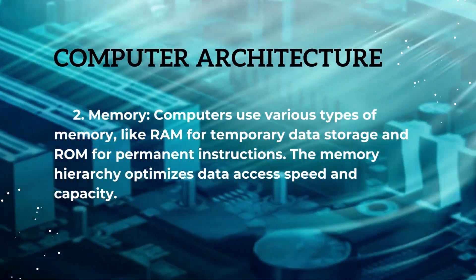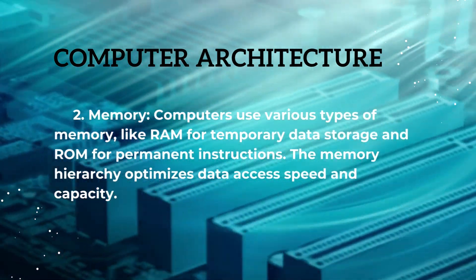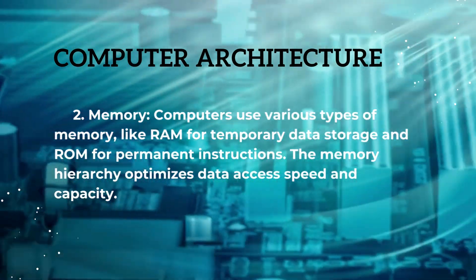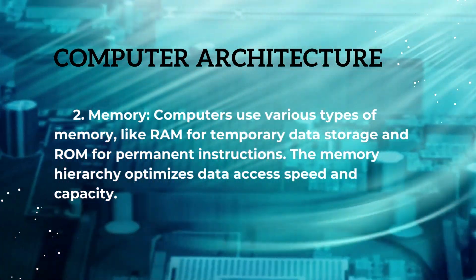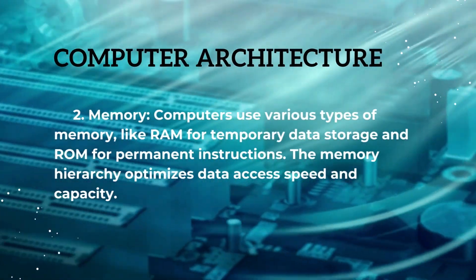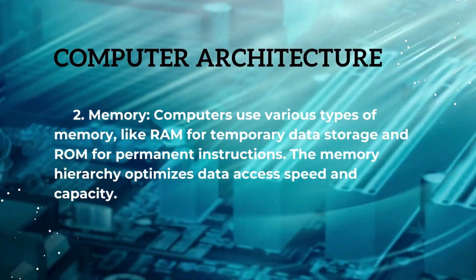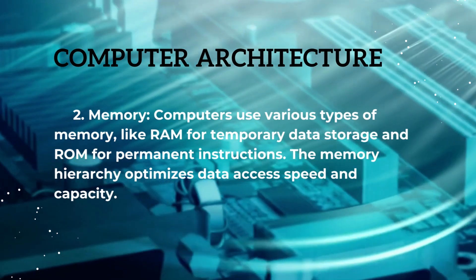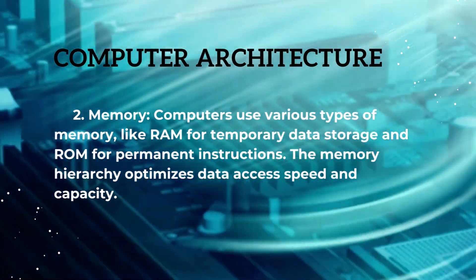The second is memory. Computers use various types of memory, like RAM for temporary data storage and ROM for permanent instructions. The memory hierarchy optimizes data access speed and capacity.